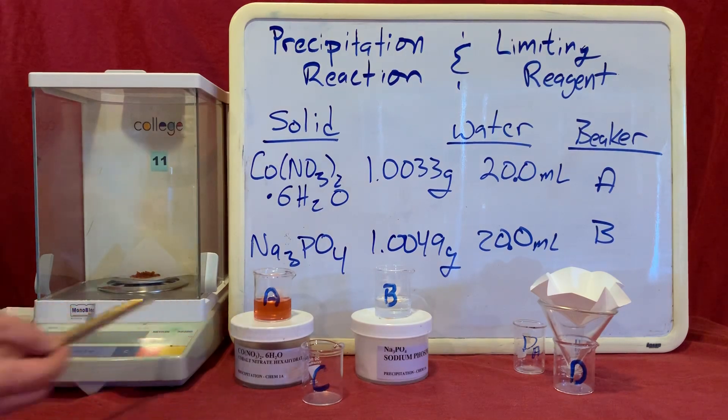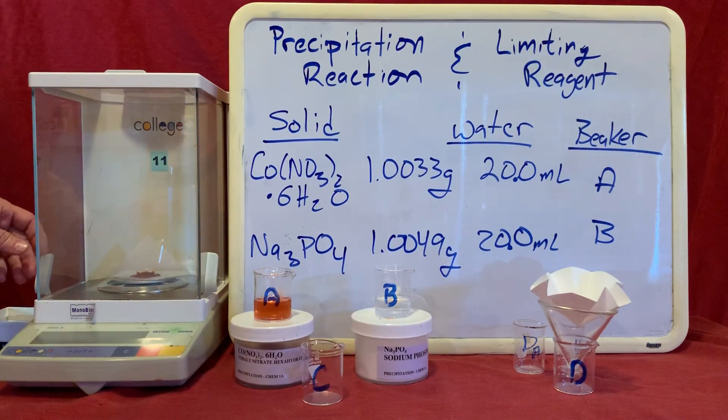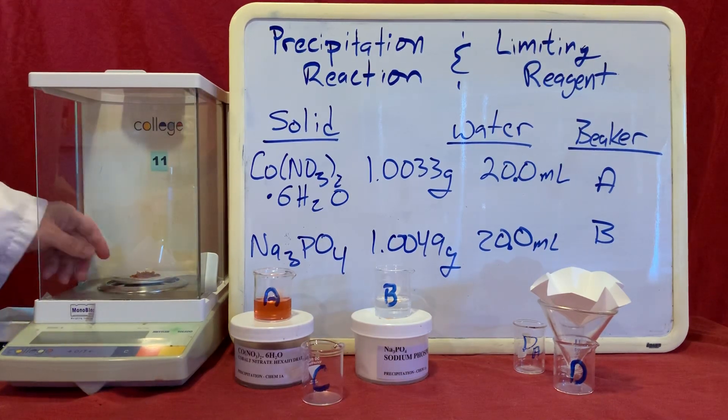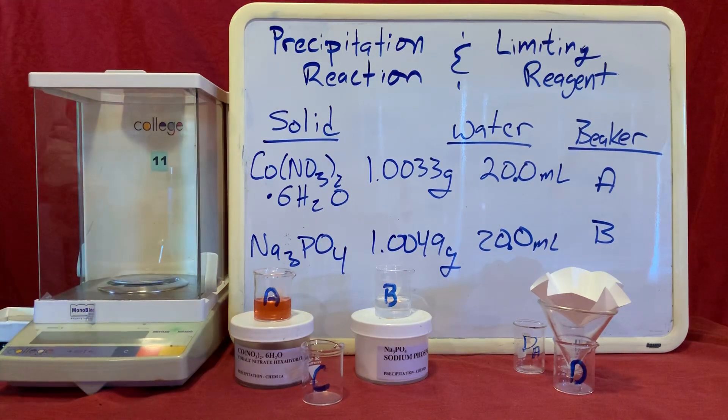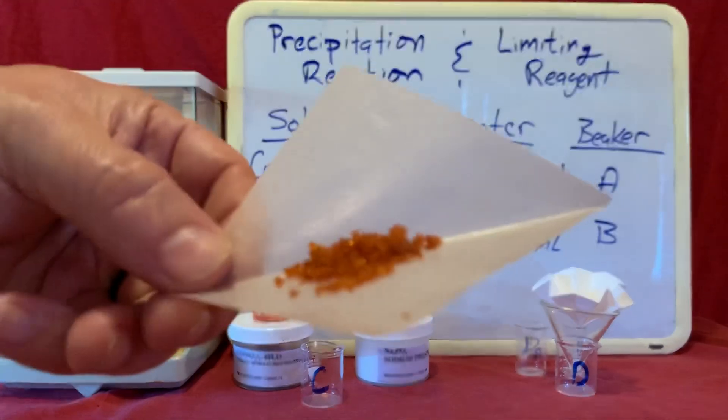Solution A is going to be made of cobalt-2 nitrate hexahydrate and water. We're going to make this solution by starting out with approximately one gram of the cobalt-2 nitrate hexahydrate. I've measured out a representative sample here on the balance, and you can see what the solid looks like.